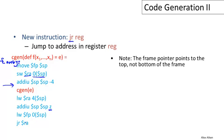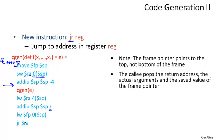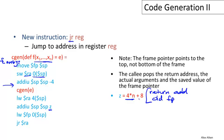Note that the frame pointer points to the top of the frame, not the bottom — this will be important for variable references. The callee pops the return address, the actual arguments, and the saved frame pointer from the stack, restoring the entire activation record and the caller's frame pointer. The size Z of the activation record is 4*N + 8: four bytes per argument, plus four bytes for the return address, plus four bytes for the old frame pointer.